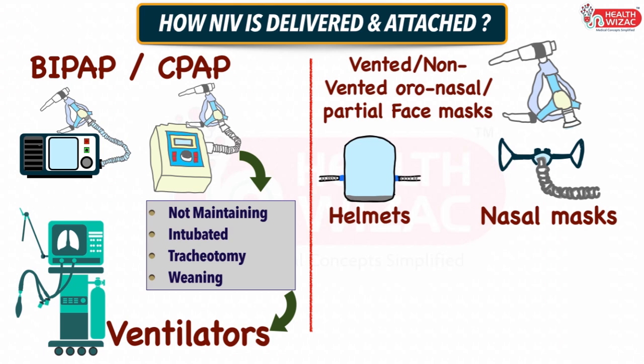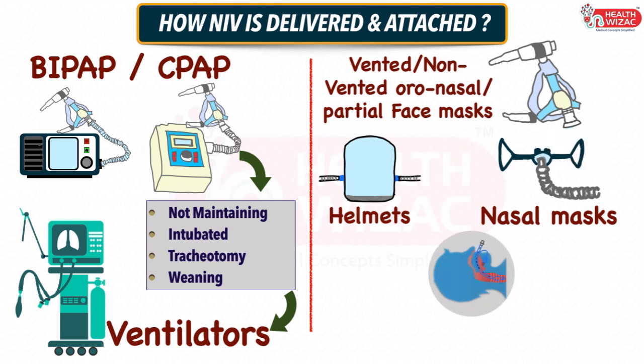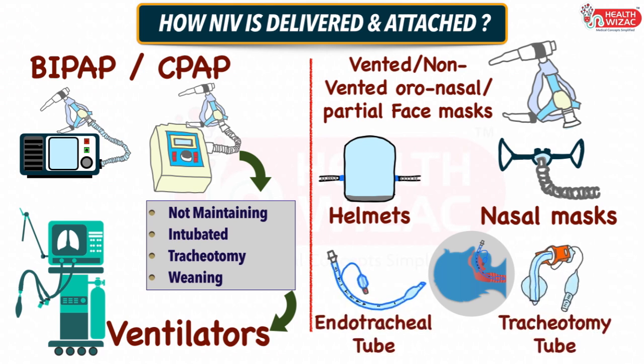If ventilators are used for NIV, then the patient is connected via a non-vented face mask. If endotracheal intubation is done or a tracheostomy tube is inserted and weaning has to be attempted, then the patient is given an NIV trial via ET tube or tracheostomy tube before extubation.